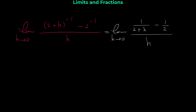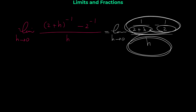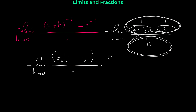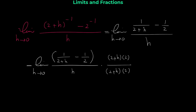To find this limit we have to get rid of the denominators, which are 2 and (2 + h). We multiply the numerator and denominator by 2 times (2 + h). Let me rewrite the limit: we multiply all of the numerator and the denominator by 2(2 + h), and don't forget to do the same thing to the denominator.